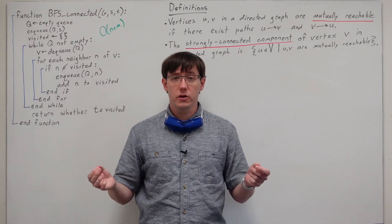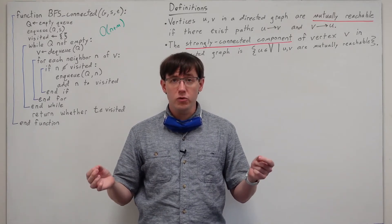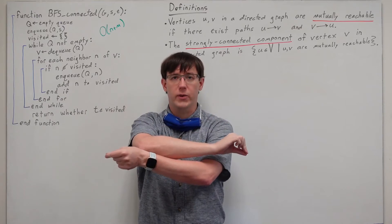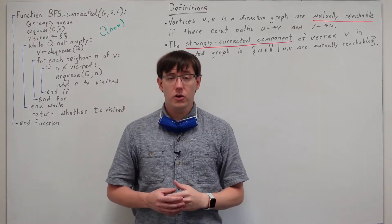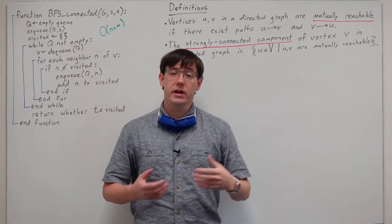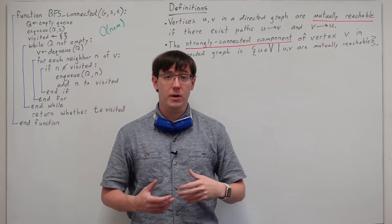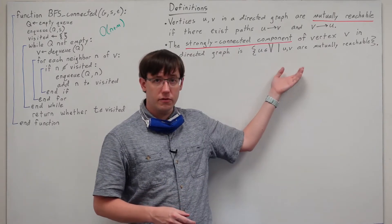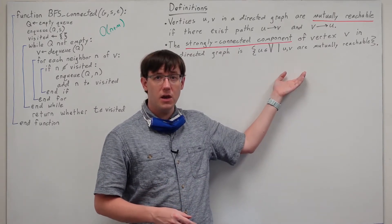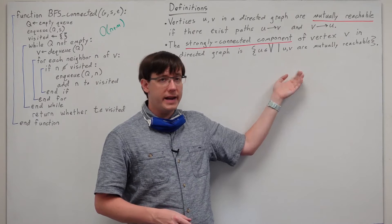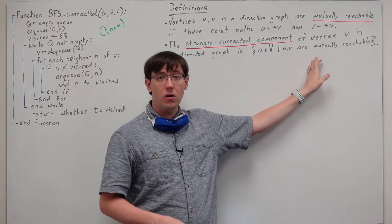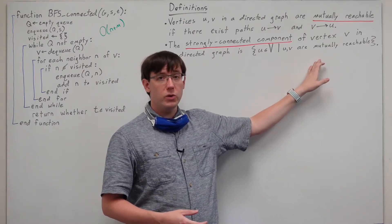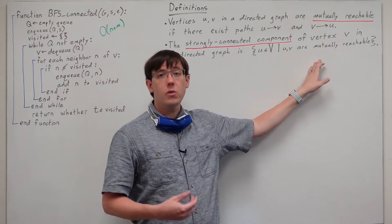We can say that two vertices are mutually reachable if there are paths in both directions. And then instead of talking about connected components, we can talk about the strongly connected component of vertex v, which we define as the set of all vertices that are mutually reachable with v.